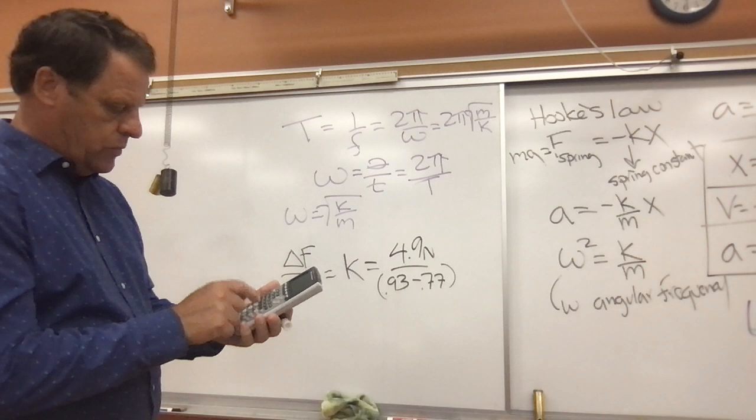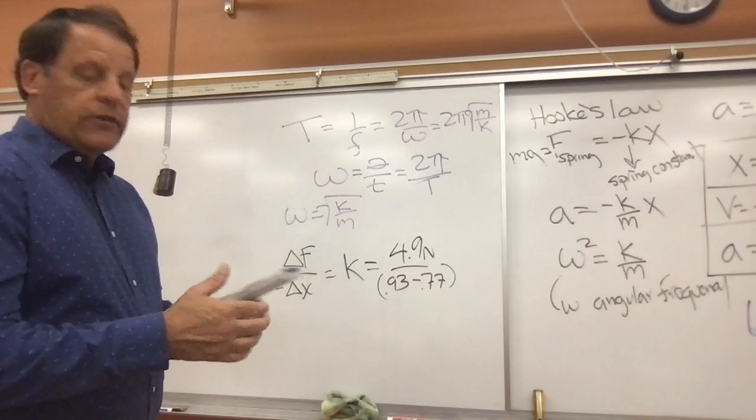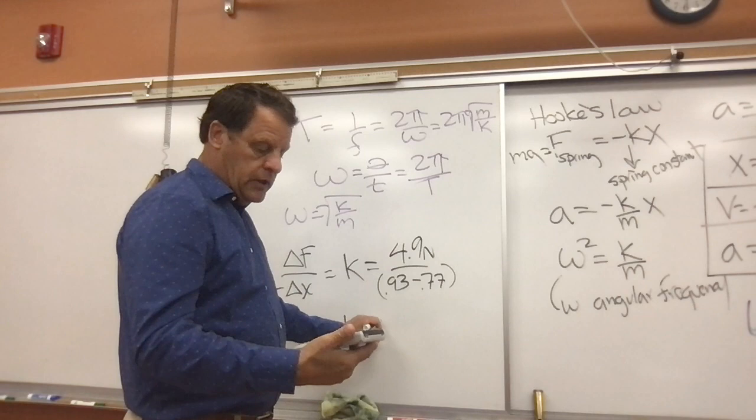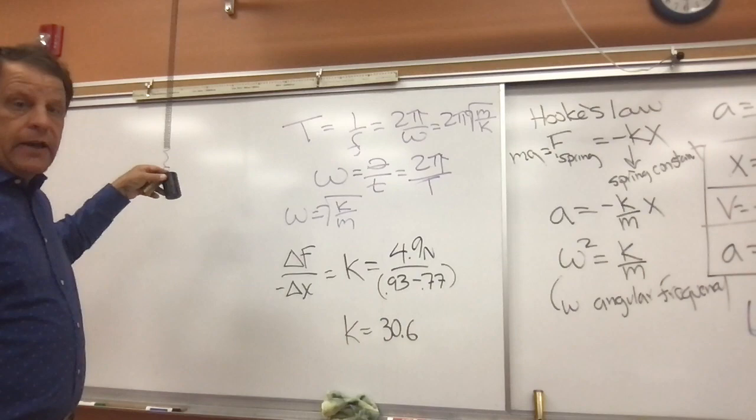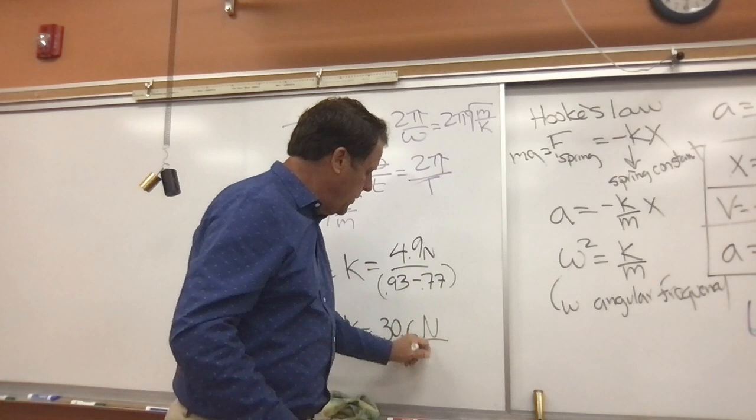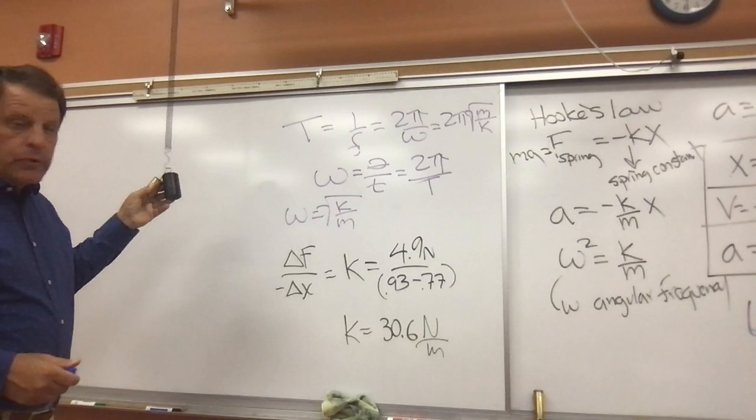4.9 divided by the quantity 0.93 minus 0.77 gives us 30.6. So our K value for this spring is equal to 30.6 newtons per meter. It doesn't matter how much mass we have on this spring — that K value of 30.6 newtons per meter is going to be the same.